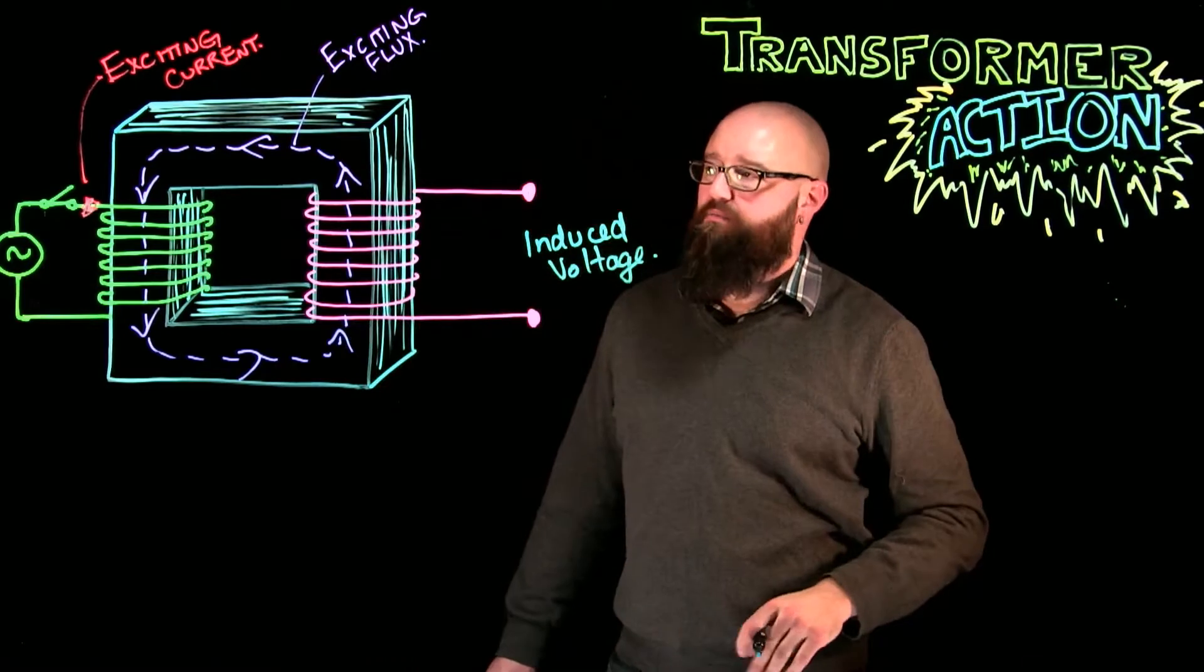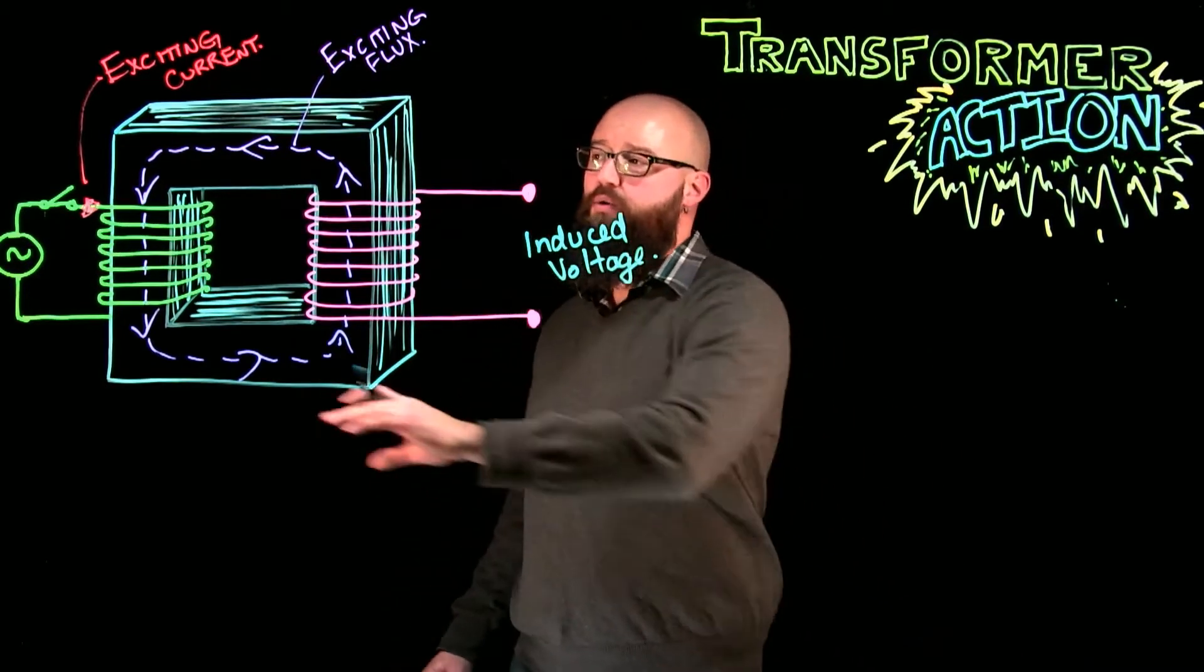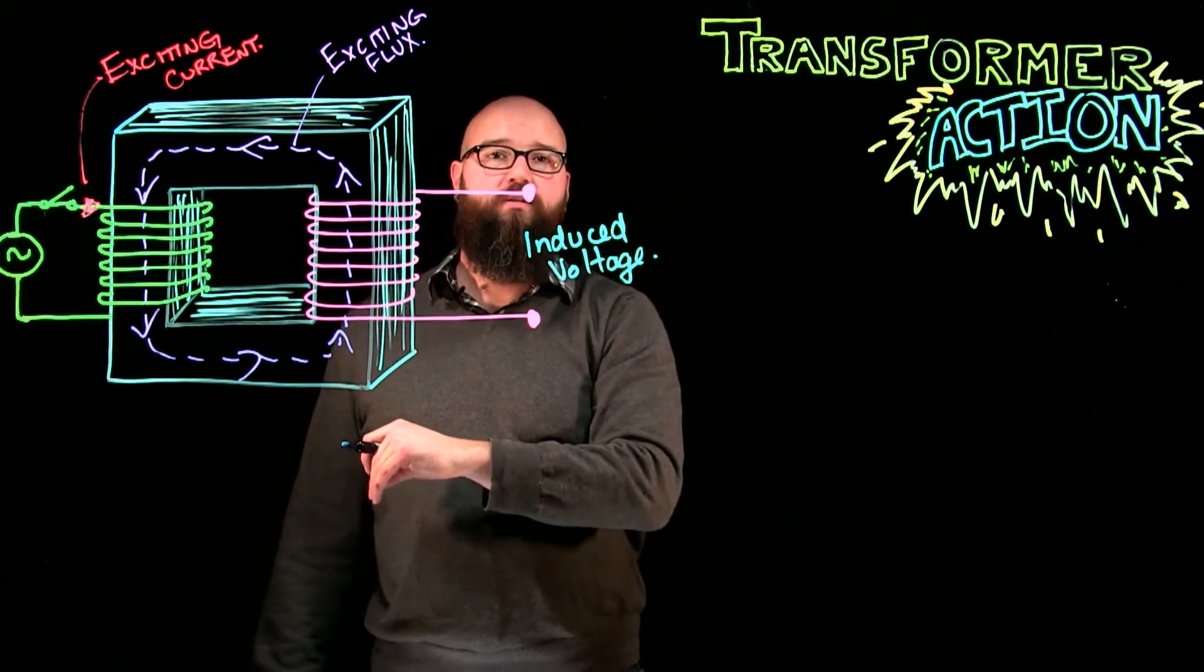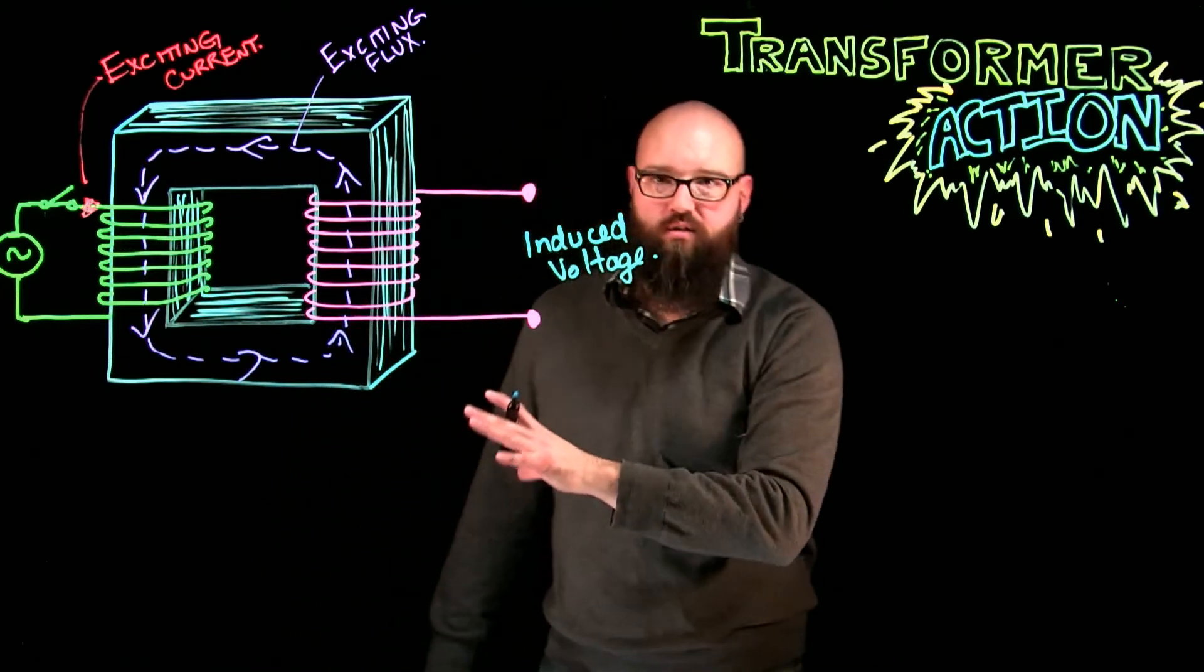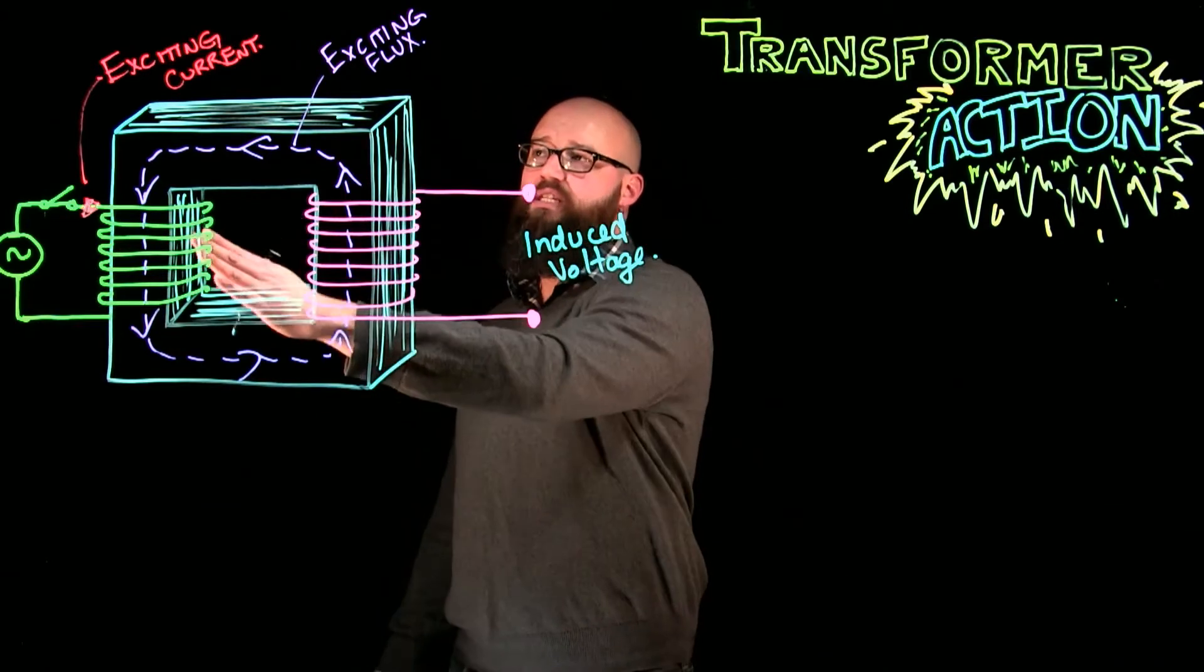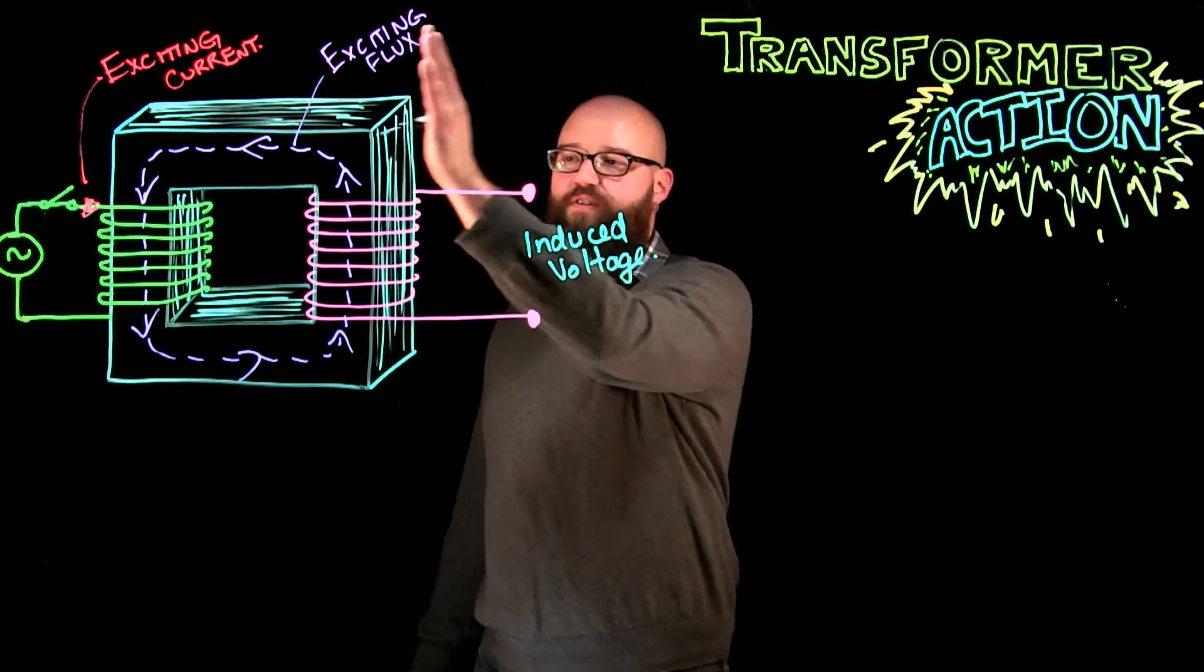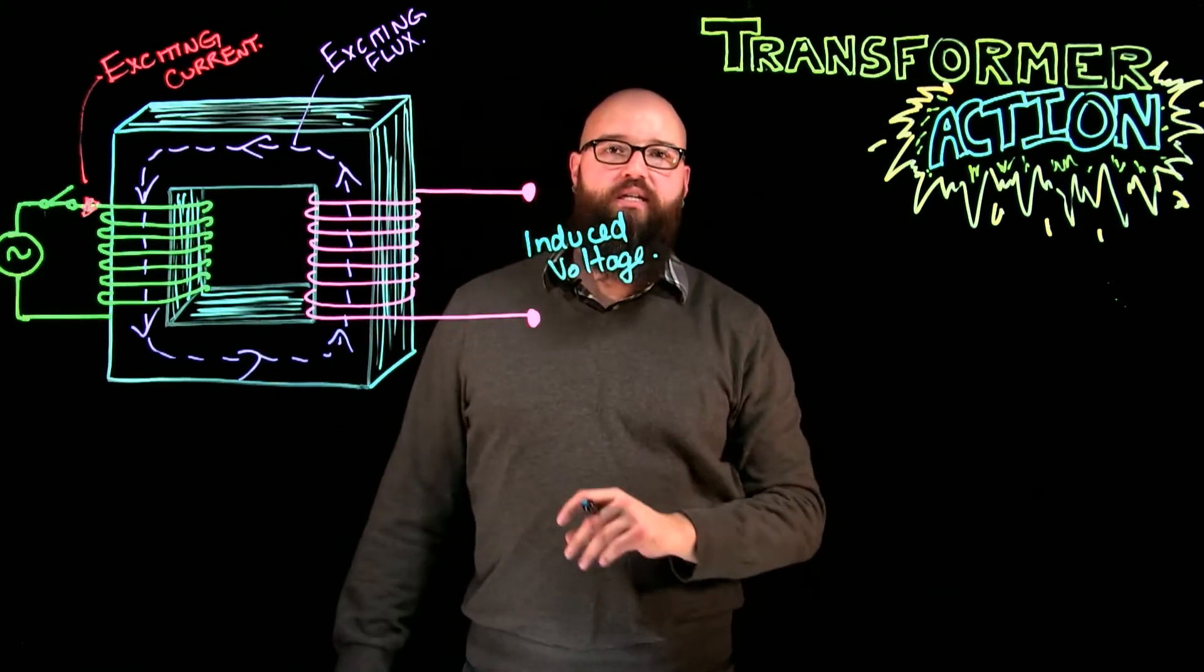And at this point right now, that's it. That's what's happening with our transformer. We have an applied voltage. We close the switch. We have an exciting current. Exciting current will give us things like core losses, all that. But we're not talking about that right now. This exciting current creates an exciting flux. This exciting flux induces a secondary voltage.